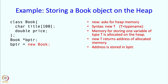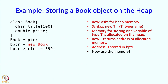So the address of that allocated memory comes back to the program and then that address gets stored in BPTR. BPTR now contains the address of some location in heap memory which has been given in response to this request. So now we can use that location — we can write BPTR arrow price because BPTR is a pointer, so we go to that variable and look at the price member.